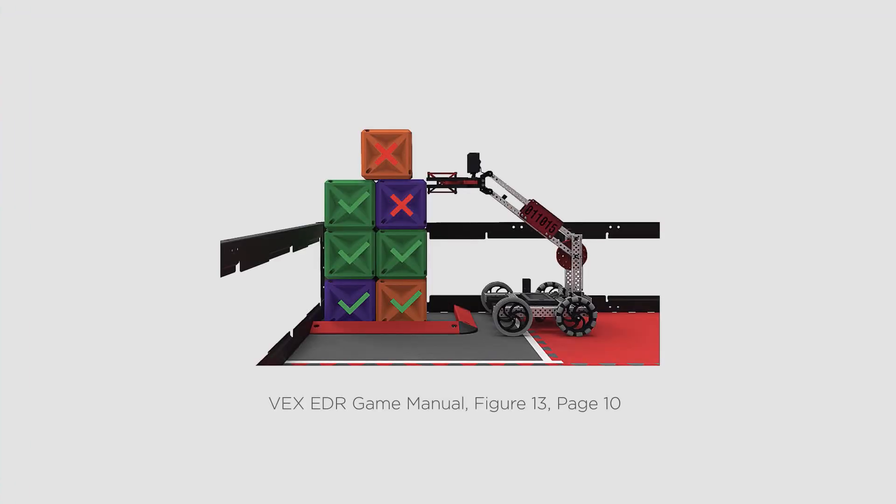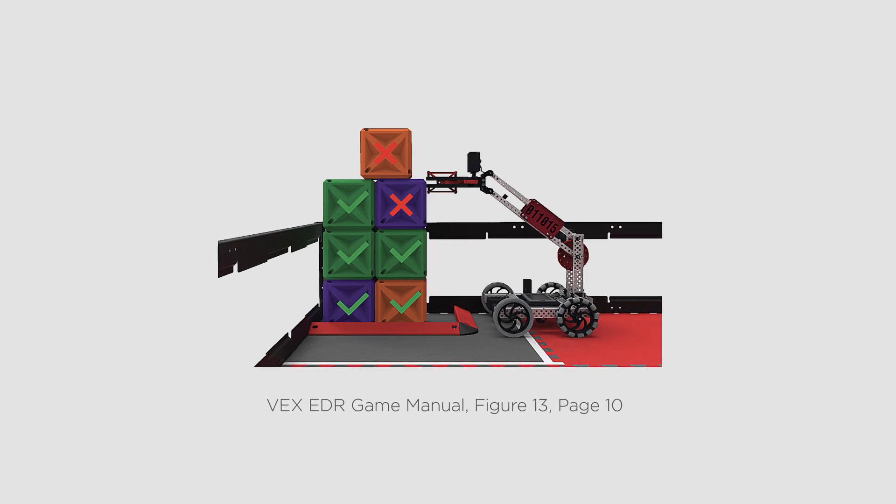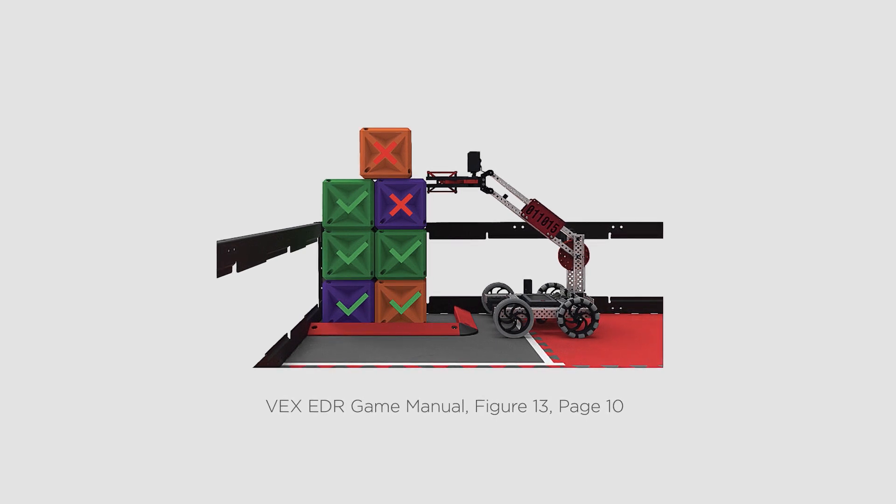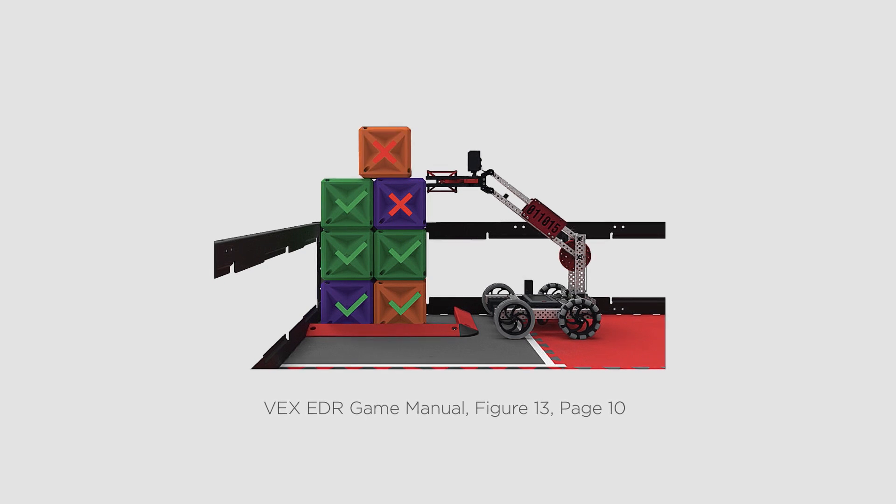For example, this purple cube is being contacted by a robot at the end of the match and it would not count as scored. As a result, the orange cube that is touching its top surface would also not be scored.